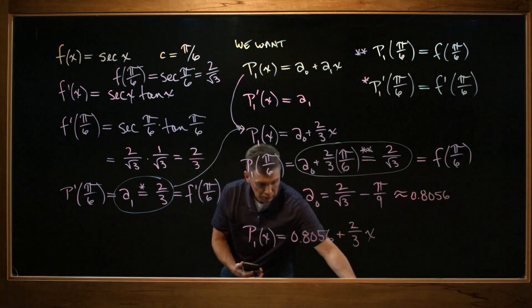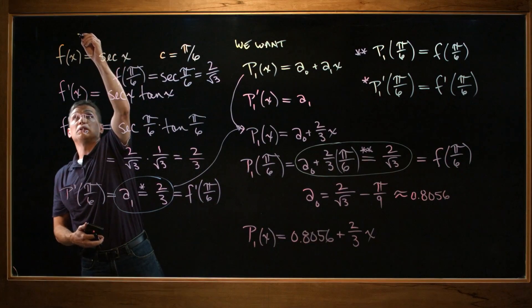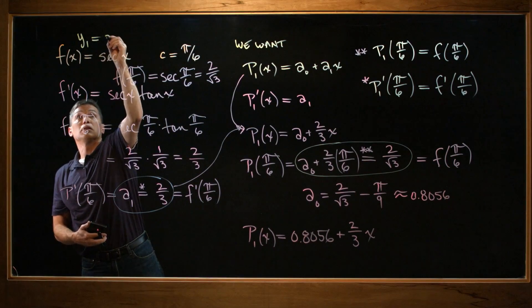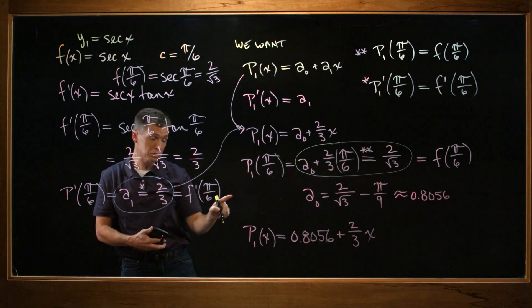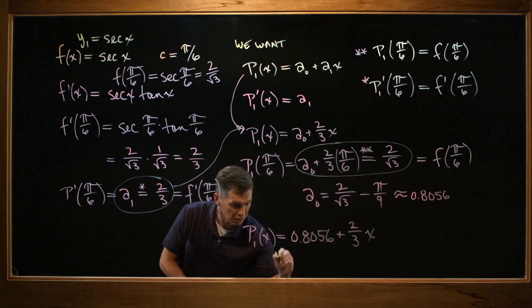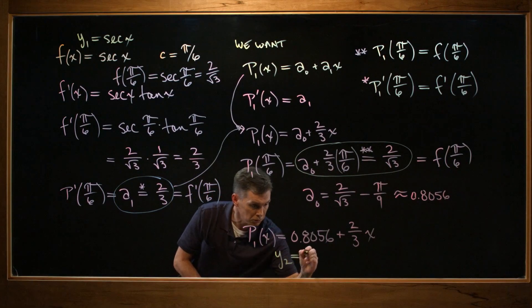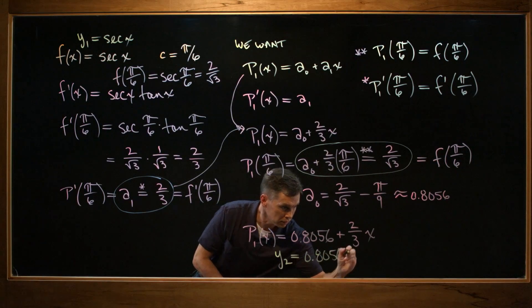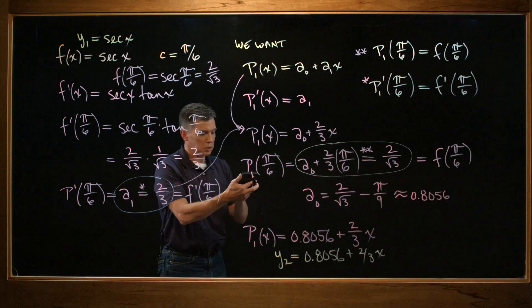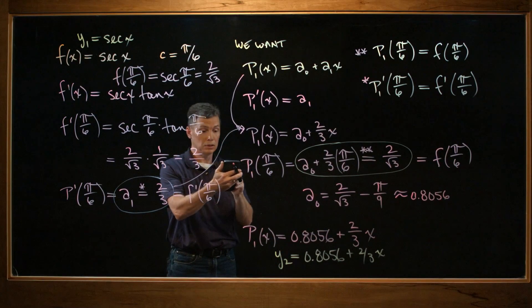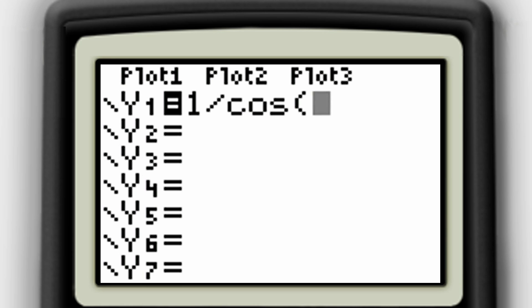For my y₁, that's the original function, secant of x. For my y₂, we're going to enter this function we just came up with. So y₂ equals, I'll enter that expression. OK, I'm entering mine, secant of x or 1/cosine(x), and y₂. I'm entering that function we just came up with. All right, when you've got yours, go ahead and graph.